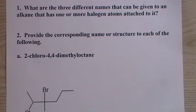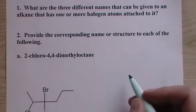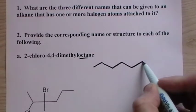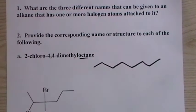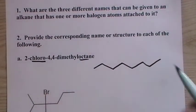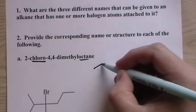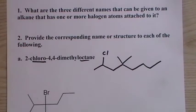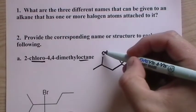Okay, provide the corresponding name or structure to each of the following. So looking at the name here, going from the name to the structure is still easy, even though we have halogens attached. That's chloro, so that's a chlorine. One, two, three, four. So chloro means chlorine, so put a chlorine on there, and that bond means it goes directly to chlorine.